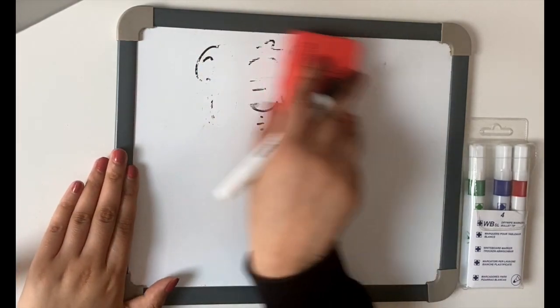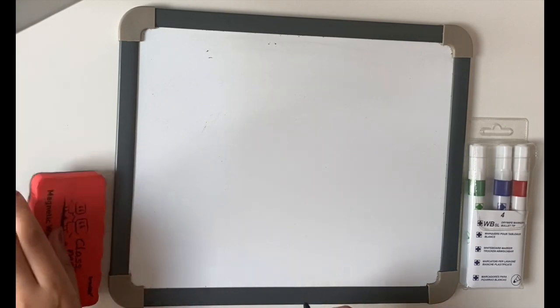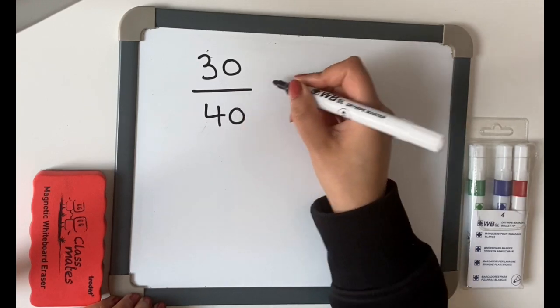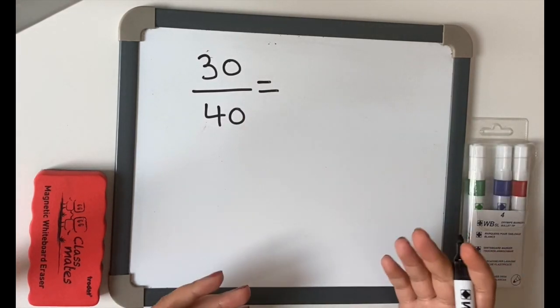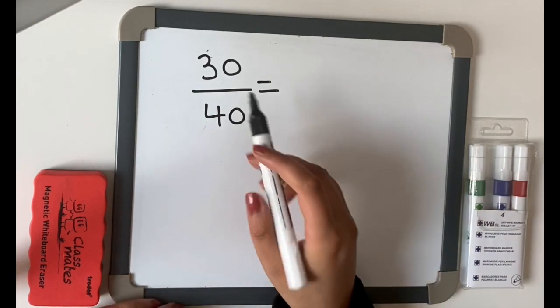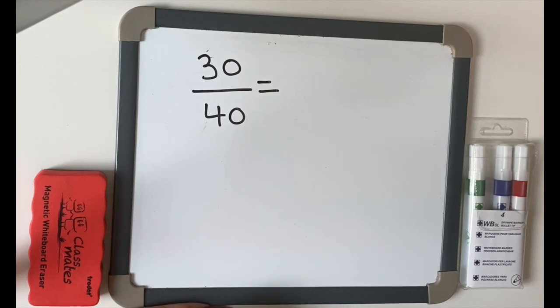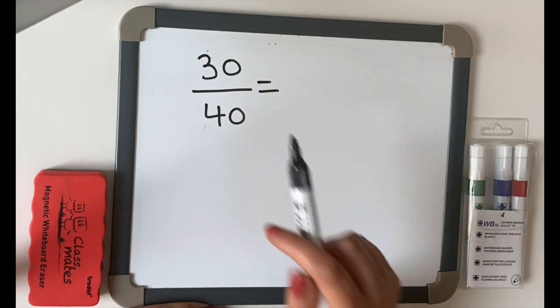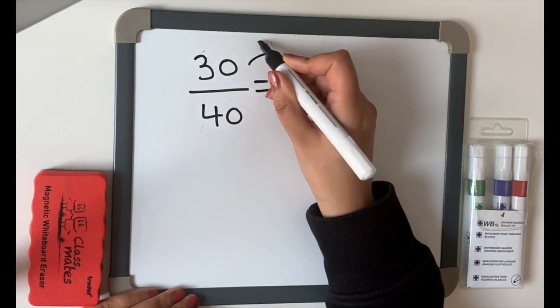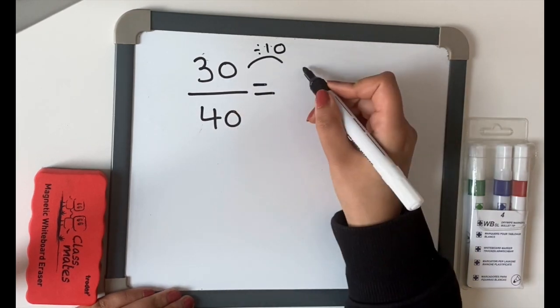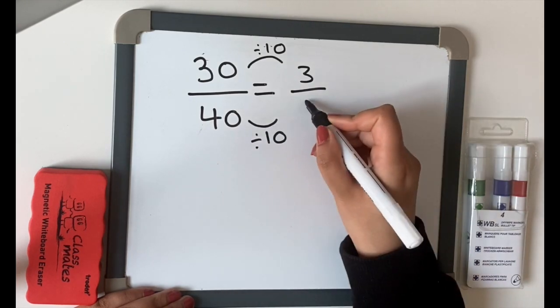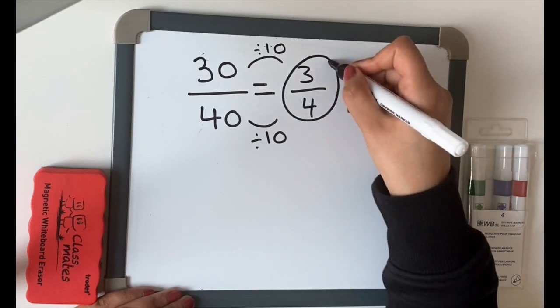Let's have a look at another one. If I did 30 over 40, like I said, we can start off divided by 2 because they are both even numbers. But what other number goes into both 30 and 40? Have a think. 30 and 40 belong in the 10 times table. So if we divide that by 10, 30 divided by 10 equals 3, 40 divided by 10 equals 4. The answer is 3 quarters or 3 fourths.